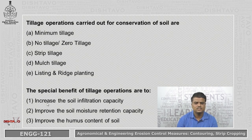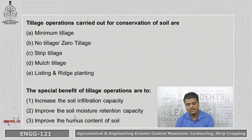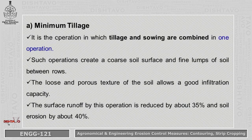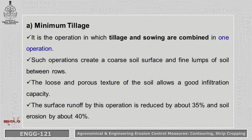The special benefits of conservation tillage operations are to increase soil infiltration, increase soil moisture retention capacity, and increase the humus or organic matter content of the soil. Minimum tillage combines tillage and sowing in one operation, creating a coarse, porous soil surface that allows good infiltration. Surface runoff is reduced by about 35 percent and soil erosion by 40 percent. It is also cost-effective.